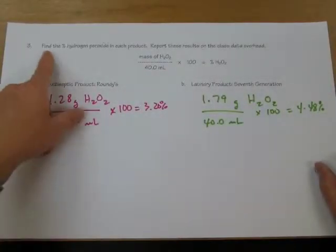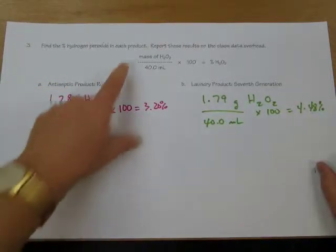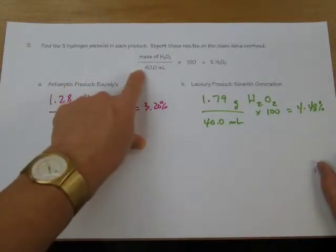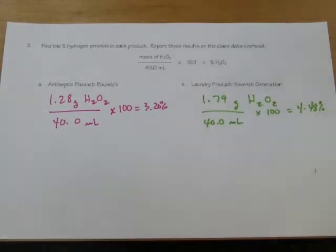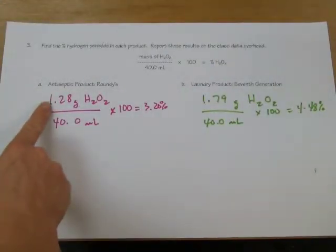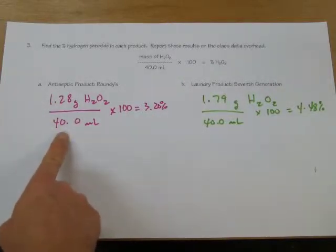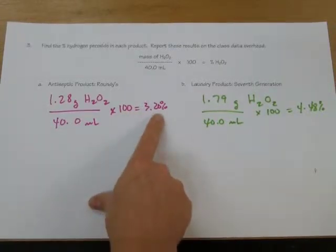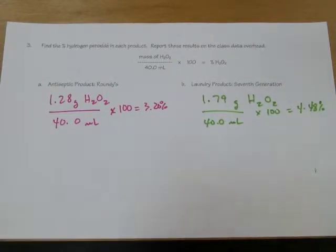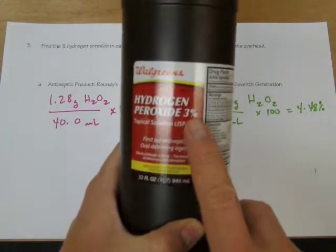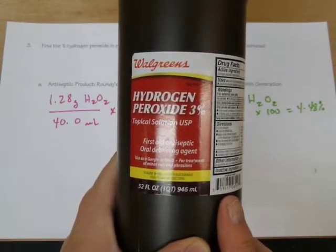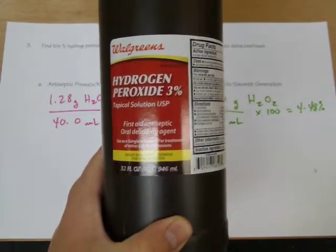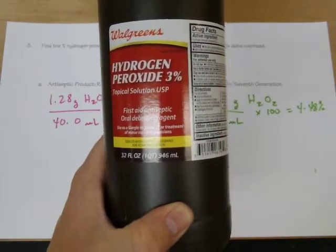The last step is to find the percent hydrogen peroxide in each product. We take the mass of hydrogen peroxide found and divide by the sample size — 40 milliliters — then multiply by 100. For the antiseptic: 1.28 g ÷ 40 mL × 100 = 3.20% hydrogen peroxide. That matches the label, which says three percent. Rounded to one significant figure, that's exactly three percent, giving us confidence in the accuracy of this technique.